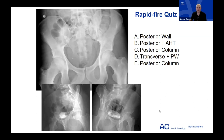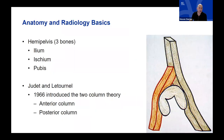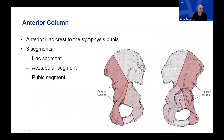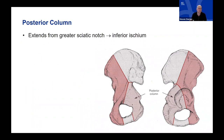Moving on to anatomy and radiology basics — we'd be remiss not to review the background osteology and how it relates to the radiographs. The hemipelvis is made up of three bones in development: the ilium, ischium, and pubis, which all fuse around the acetabulum. Judet and Letournel, over 50 years ago, introduced the two-column theory. The anterior column runs from the iliac crest down to the symphysis pubis — with iliac, acetabular, and pubic segments — and the posterior column extends from the greater sciatic notch down to the inferior ischium.